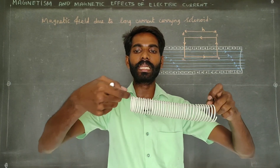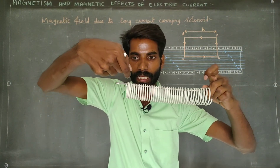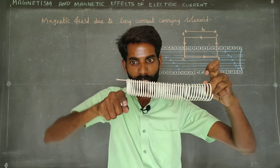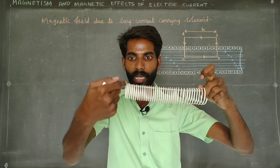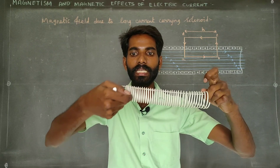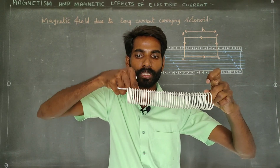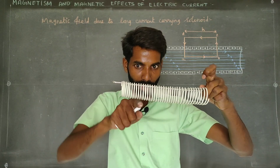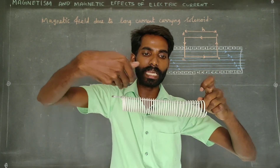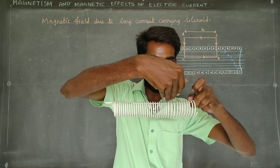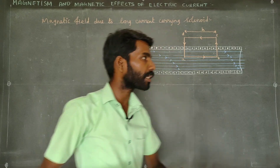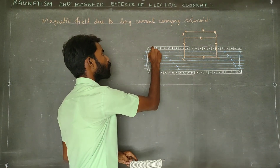This solenoid — looking at the current in each turn — if the current is here, here, and here at each point along the solenoid, how is the current flowing over each turn? The current flows over each turn in a consistent direction.